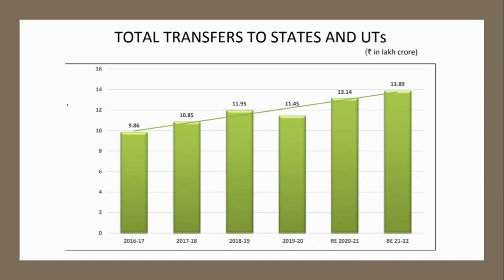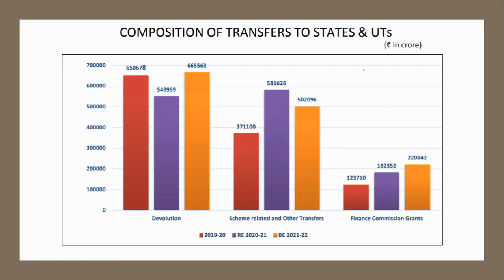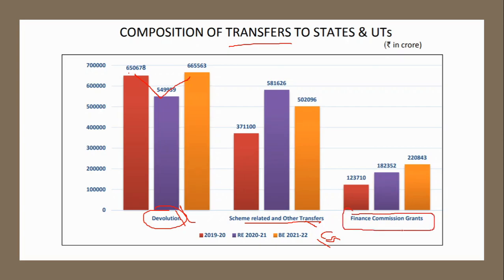Regarding transfers to states, the amount of resources transferred to states and UTs is constantly increasing. The composition of transfers: the major component is devolution of tax resources, which saw a decrease but is projected to increase. Second is schemes and other transfers, such as centrally sponsored schemes. Third is grants recommended by the Finance Commission. So the Finance Commission plays two roles: recommending tax devolution (the major component) and recommending grants.